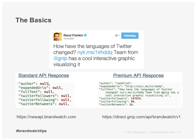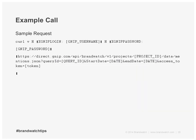Starting with this illustration, you can see a recent tweet from Rand Fishkin at Moz. On the left side, you see what the API response would look like from the standard Brandwatch API — a subset of fields where all the values that would have come from Twitter are null. On the right, you see the premium API response where all of the Twitter values have been filled in — you're getting all the data you would have wanted from Twitter.com. Underneath, you can see what the actual API URLs look like. Standard API responses go straight through brandwatch.com, while premium API responses get routed through a Gnip URL where Gnip handles the request on behalf of the client.